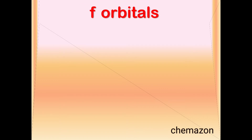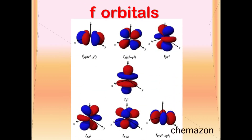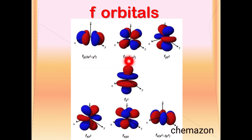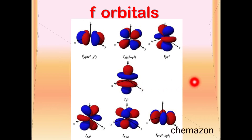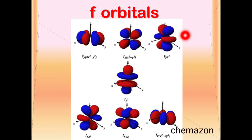The next set of orbitals is the F orbitals, and there are a total of seven F orbitals — that is FY(X-squared-minus-Y-squared), FZ(X-squared-minus-Y-squared), FYZ-squared, FZ-cubed, FXZ-squared, FXYZ, and FX(X-squared-minus-3Y-squared). You can see all seven F orbitals have different shapes.